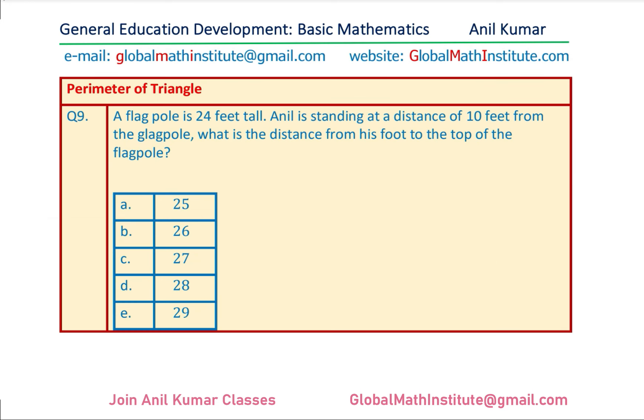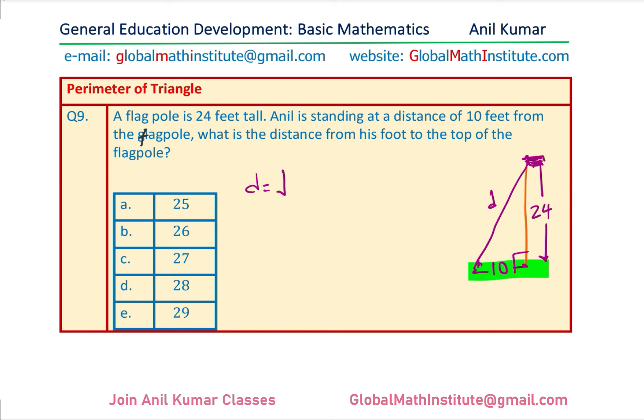Question 9: A flagpole is 24 feet tall. Anil is standing 10 feet from the base of the flagpole. What is the distance from his foot to the top of the pole? It's a good idea to sketch the diagram. The flagpole is 24 feet, the horizontal distance is 10 feet, and we need to find the hypotenuse using the Pythagorean theorem.